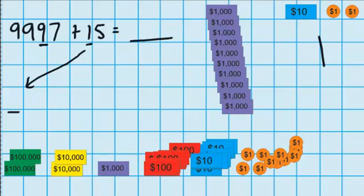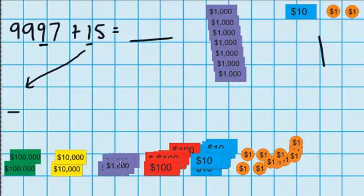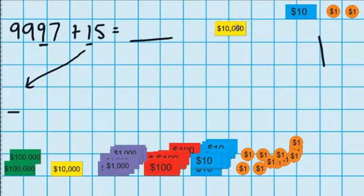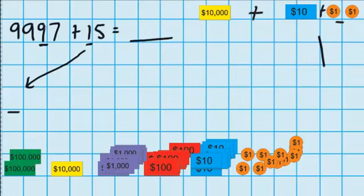So I'm going to swap those over now. There goes 1, 2, 3, 4, 5, 6, 7, 8, 9, and 10 — and there is the $10,000 note that I swapped it for. So now you can see that's left me with $10,000 plus $10 plus $2. So the answer to $9,997 plus $15 must be $10,012.